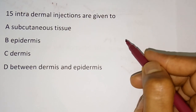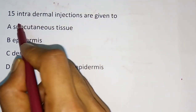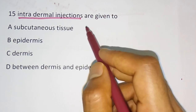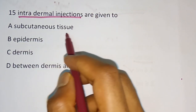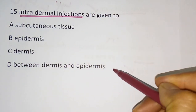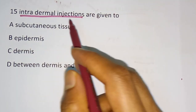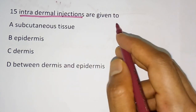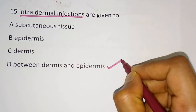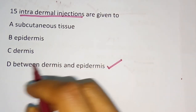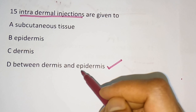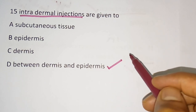Question 15 (last question): Intradermal injections are given to which site? Options: subcutaneous tissue, epidermis, dermis, between dermis and epidermis. The correct answer is option D — intradermal injections are given between the dermis and epidermis.